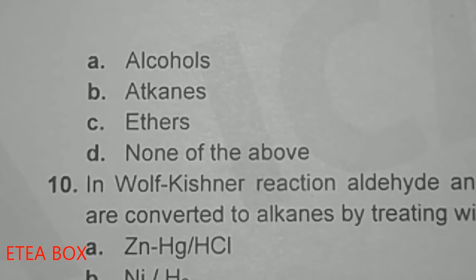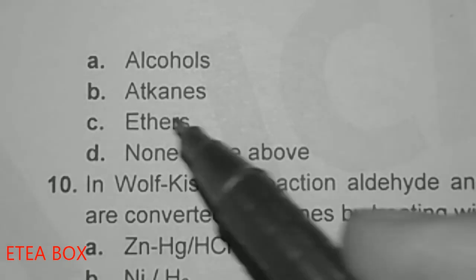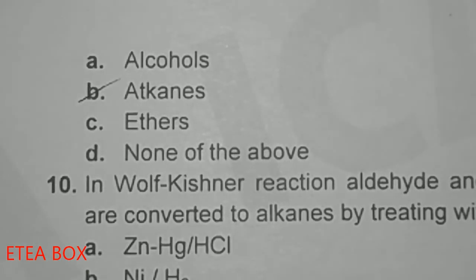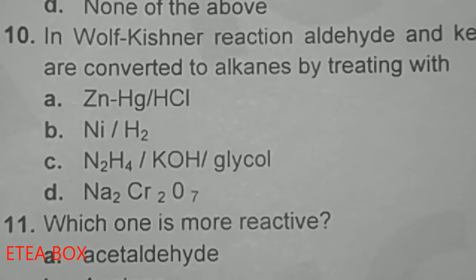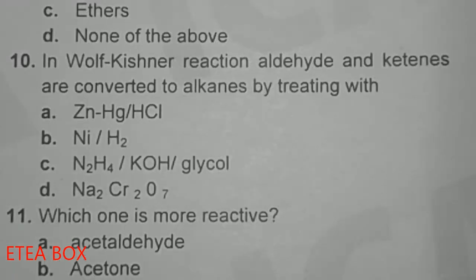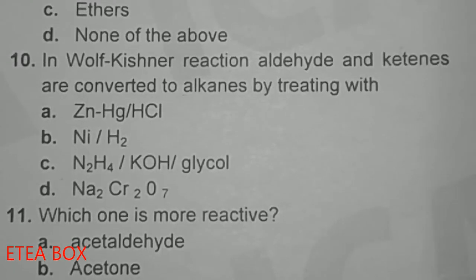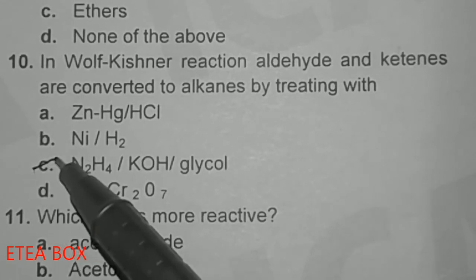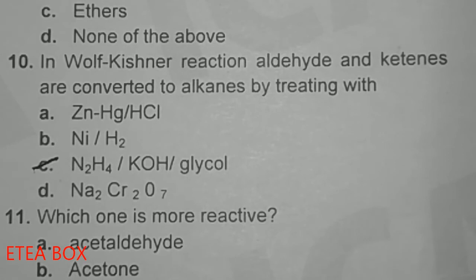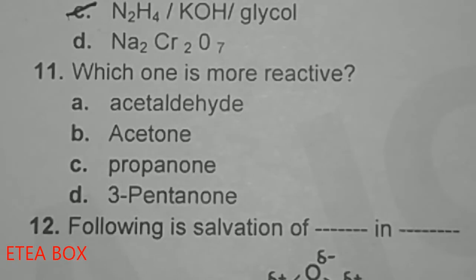Clemmensen reaction converts aldehydes and ketones into alkane; option B is correct. In the Wolff-Kishner reaction, aldehydes and ketones are converted into alkane by treating with hydrazine, KOH, and glycol; option C is correct.